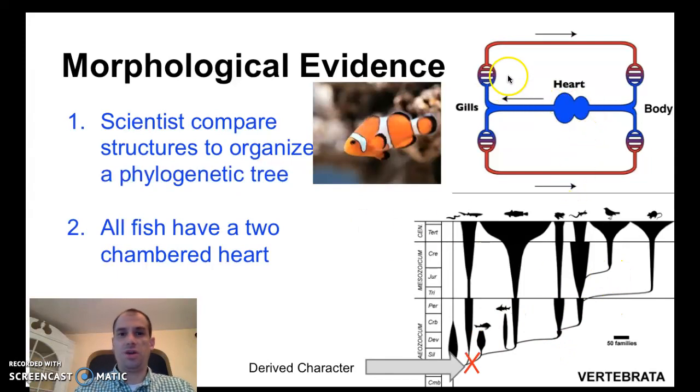To go over this picture a little bit, the blue is what we call deoxygenated blood. It does not have oxygen in it. The red color is oxygenated blood. You can see that the heart pumps the deoxygenated blood to the gills, where it becomes oxygenated or gains oxygen, and then it goes to the body to be used, returns to the heart to be pumped.